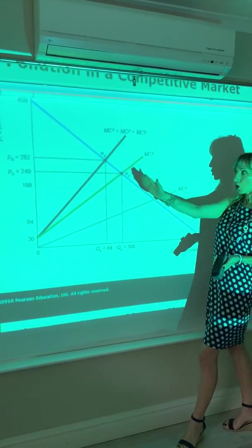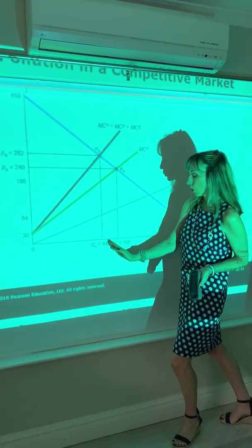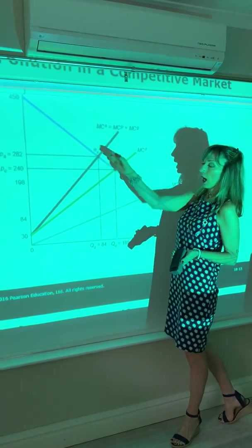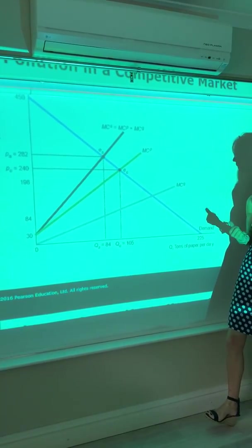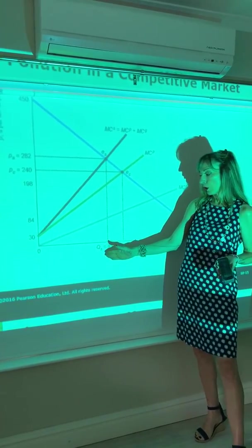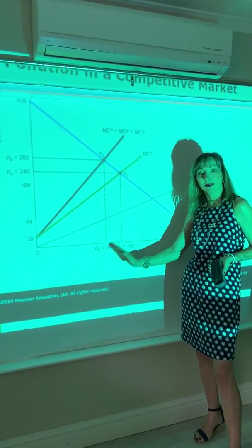So we see that the social optimum is actually associated with a lower level of output and a higher price because of taking the externality into account. We'd actually prefer less output because it means less pollution.